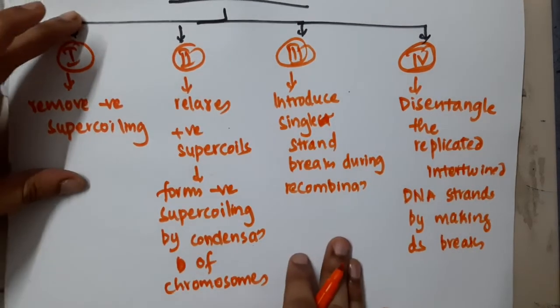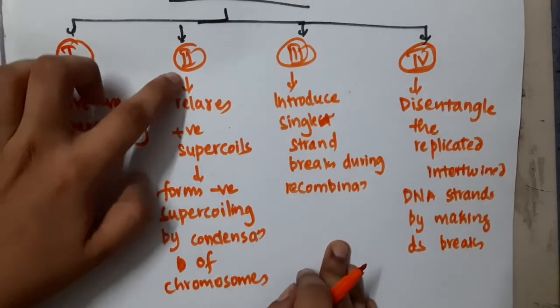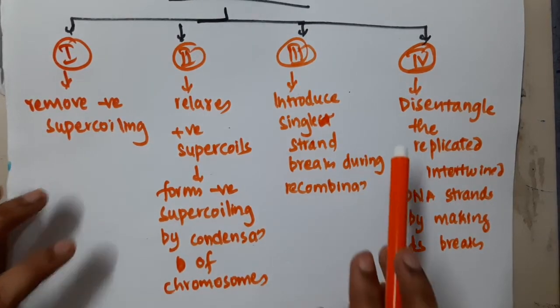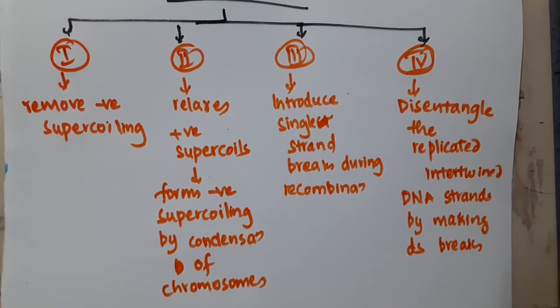So type 1 removes negative supercoiling. Type 2 relaxes positive supercoiling and forms negative supercoiling by condensation of chromosomes. Type 3 introduces single stranded breaks, whereas type 4 disentangles the replicated intertwined DNA strands.